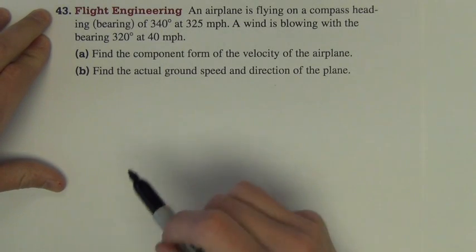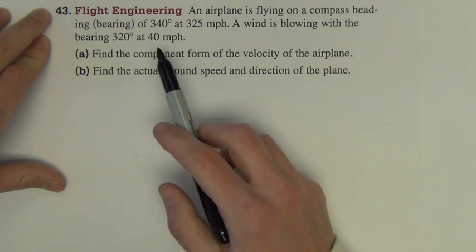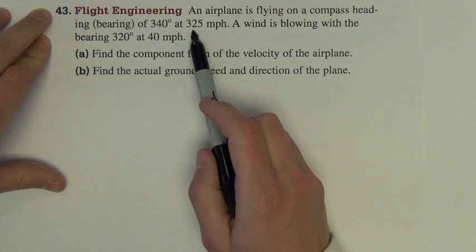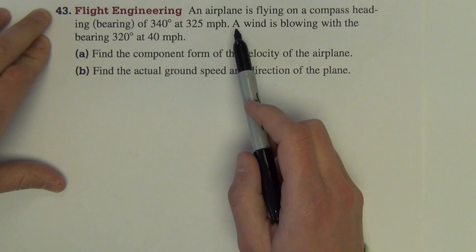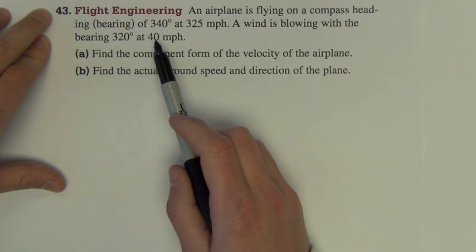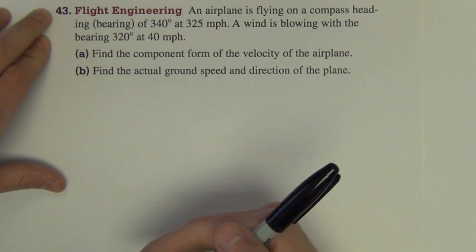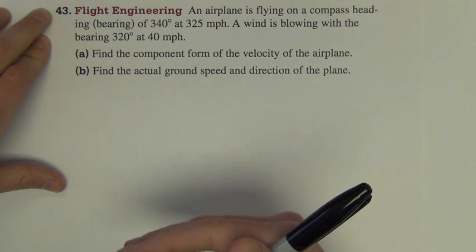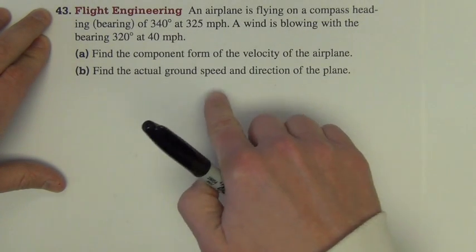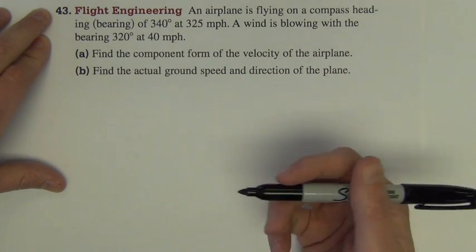The next example says that we have an airplane flying on a compass heading, which is its directional bearing of 340 degrees at 325 miles per hour. And now more realistic from the last example, we have wind that's blowing with the directional bearing of 320 degrees at 40 miles per hour. In the end, we're going to attempt to determine how does the wind affect the actual speed and direction of the airplane.